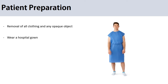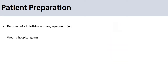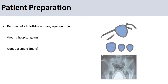For abdomen x-rays, gonadal shields should only be used for male patients, with the upper edge of the shield carefully placed under the symphysis pubis. For female patients, shields should only be used when they do not obscure essential anatomy. Generally, the decision should be made by a physician.